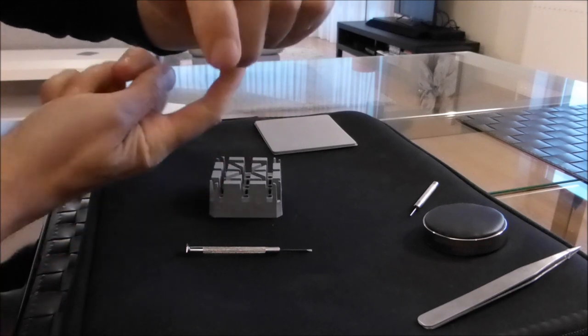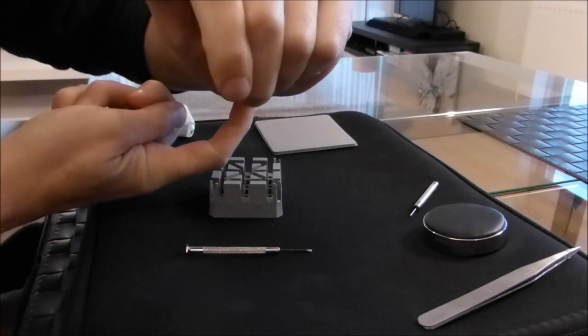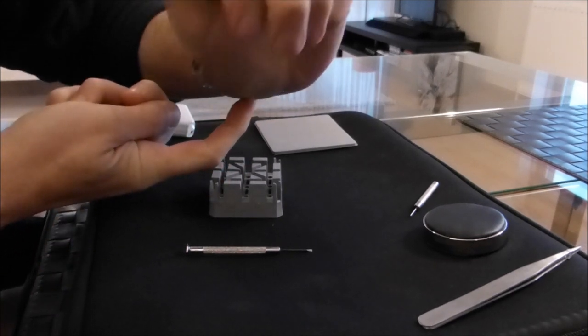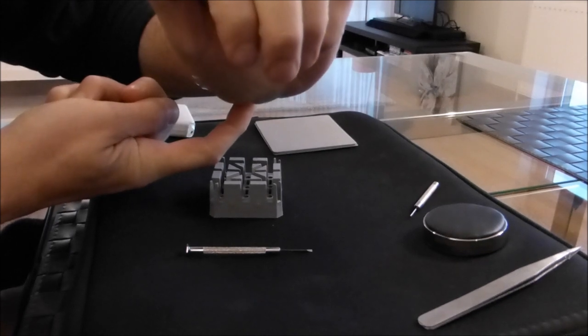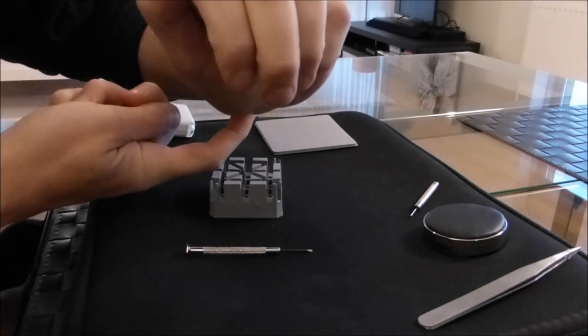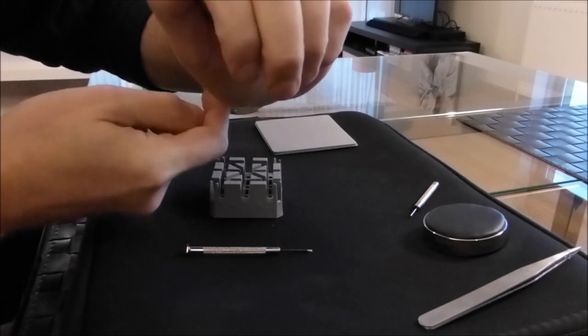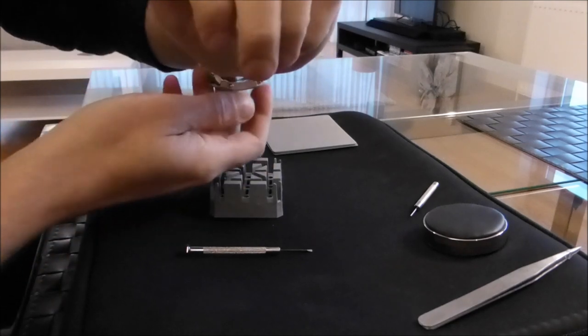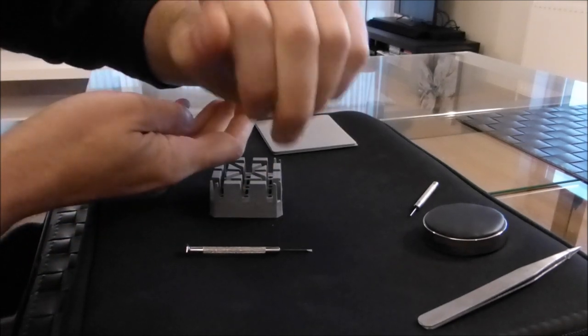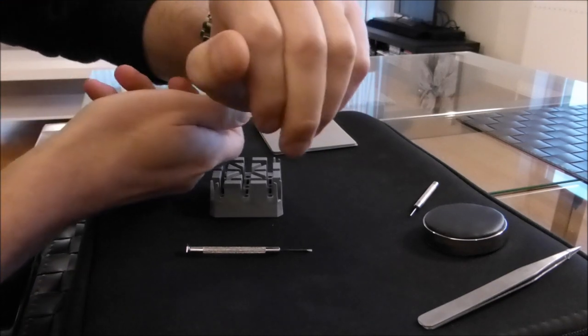And then take the links out equally so the clasp is still in the right position on the wrist once you've taken the links out. It can take a bit longer but it makes it sit better on the wrist than if you take them all out from one side.